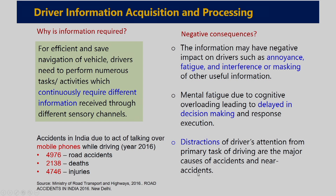Distracted driving also leads to accidents. According to a report by the Ministry of Road and Transport and Highways in 2016, in that year 4,976 road accidents happened due to drivers' distracted behavior while talking over mobile phones, resulting in 2,138 deaths and 4,746 people injured. It is clear that while drivers are distracted and not concentrating on their primary task — navigating the vehicle based on information received from the road — these types of accidents may happen.